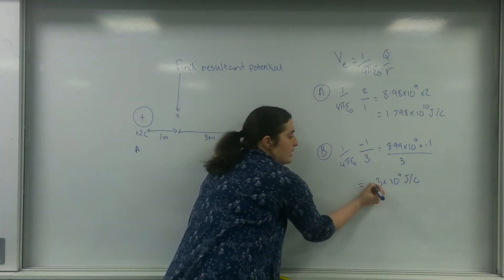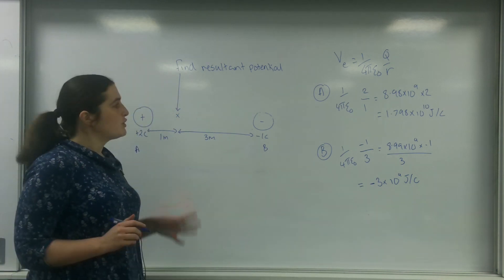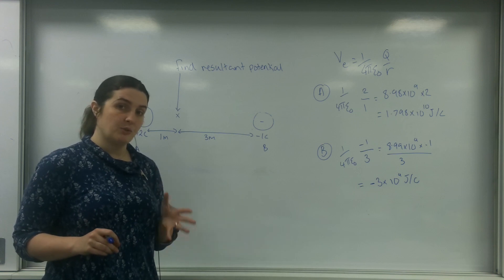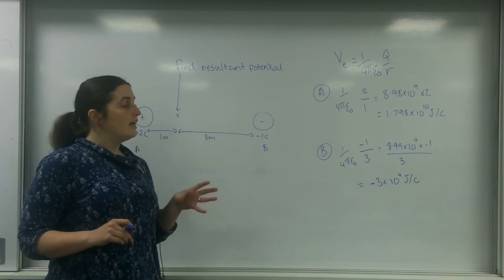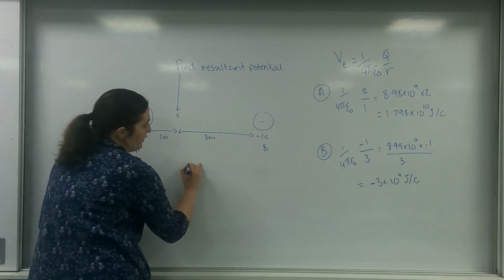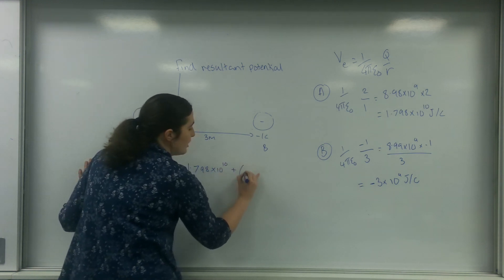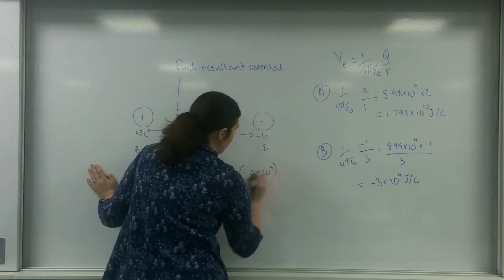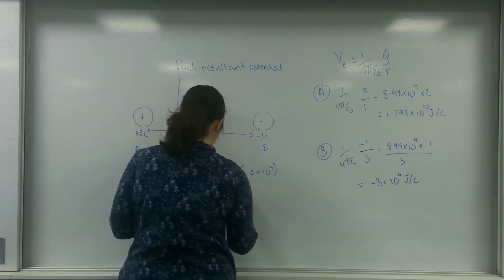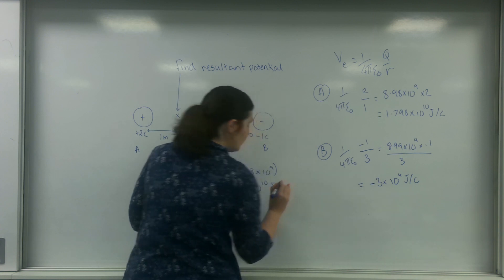This is important — it has a negative sign. When finding the resultant potential at a point, all you need to do is add the potentials together, and it is important you remember the signs. So the total potential at this point is 1.798 × 10¹⁰ + (−3 × 10⁹), which equals 1.498 × 10¹⁰ joules per coulomb.